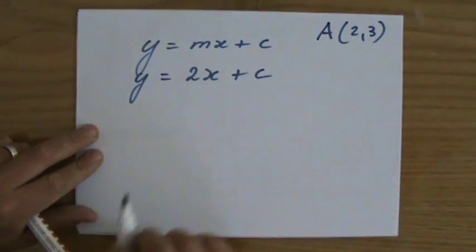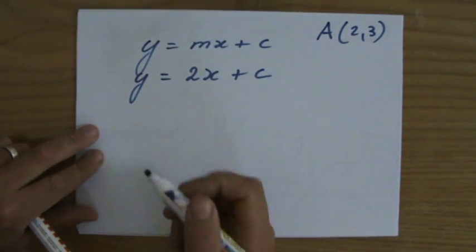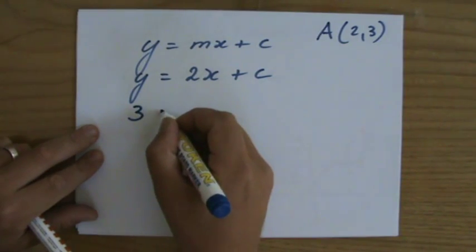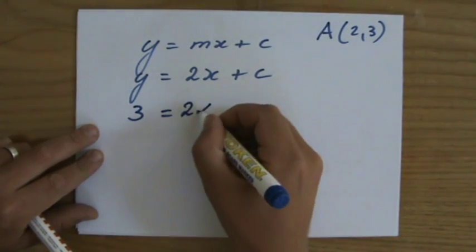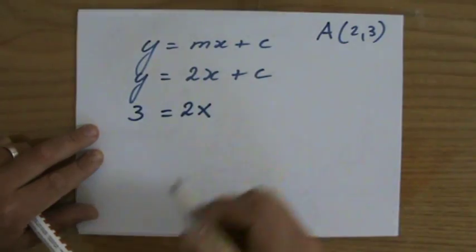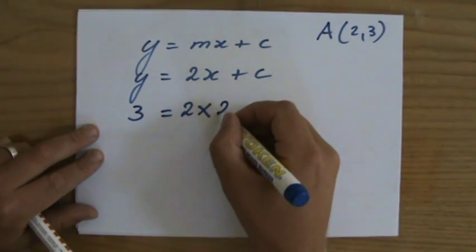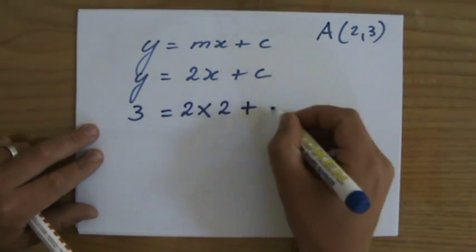So y. What is y? If I look at point A. What is the y-coordinate? Well, that is three. You're absolutely right. Two times, what is my x-coordinate of point A? Two. Well done. Plus c.